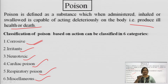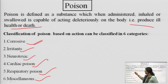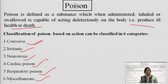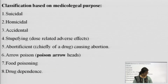So these are the classification of poisons based upon their site of action: corrosives, irritants, neurotoxics, cardiac poisons, respiratory poisons, and miscellaneous. Miscellaneous ones have a general role.